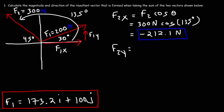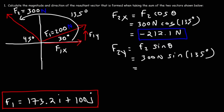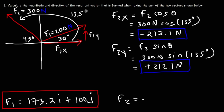Now let's calculate the y component of F2. That's going to be F2 times sine theta, so 300 newtons times sine 135. Plugging this in, you get positive 212.1 newtons. It's positive because the y component is going up, above the positive x-axis. Y is positive in quadrants 1 and 2.